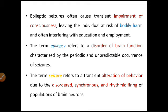A seizure is referred to as a transient alteration of behavior due to the disordered, synchronous and rhythmic firing of a population of brain neurons. This alteration of behavior occurs because of disordered, synchronous and rhythmic neuronal firing — the firing frequency will change but it will be rhythmic and synchronous, though not the normal firing. All of that together brings out the seizure.